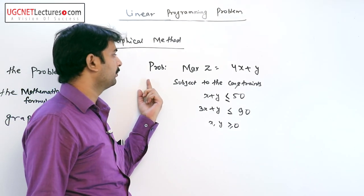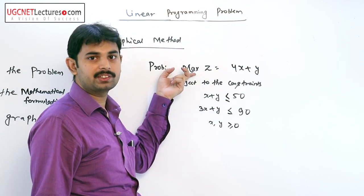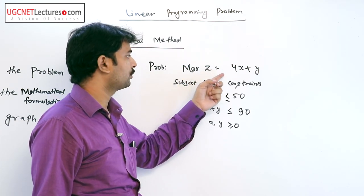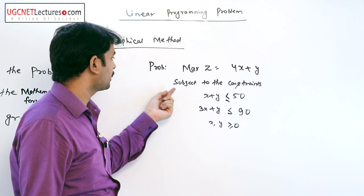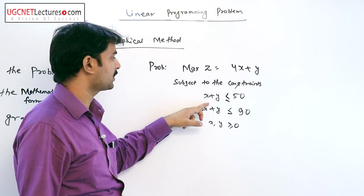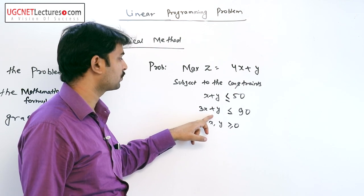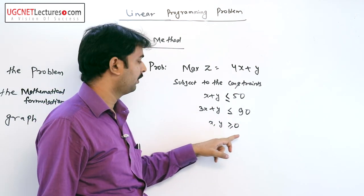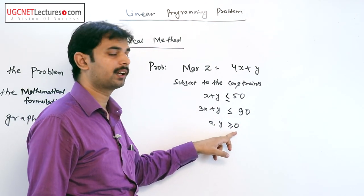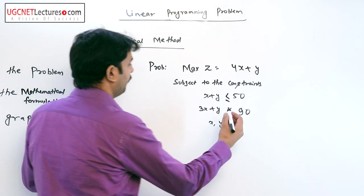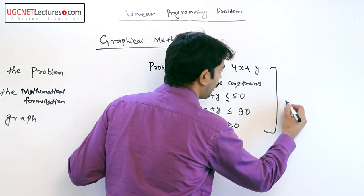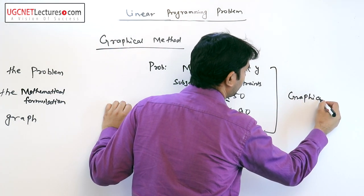If the problem is of maximization type: maximize z equals 4x plus y, subject to the constraints x plus y is less than or equal to 50, and 3x plus y is less than or equal to 90, where x and y are positive. How do we solve this problem by graphical method?